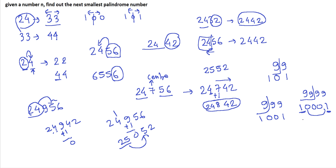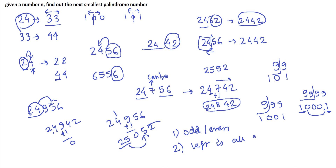These were the key cases to understand the intuition behind solving this problem: one is when the number of digits is odd or even, and another is when the left part is all 9s. In the next part of the video we will look at the code and pseudocode for solving the problem.